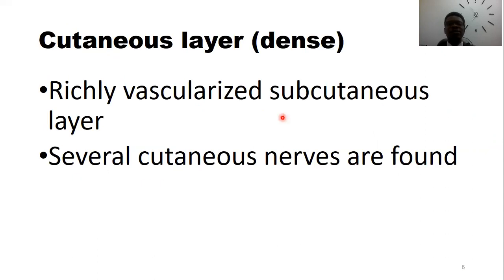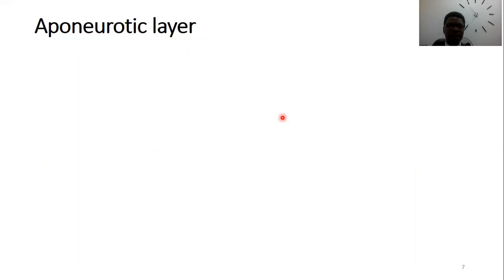The next layer is the continuous layer — the dense continuous layer. It's richly vascularized and also has a lot of cutaneous nerves within it. That's all about that layer.